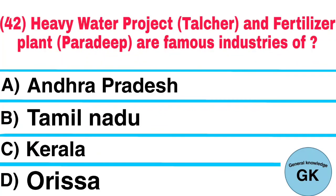Question number 42. Heavy water project Talcher and fertilizer plant Paradeep are famous industries of: A. Andhra Pradesh, B. Tamil Nadu, C. Kerala, D. Orissa. Answer: Orissa.